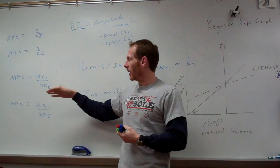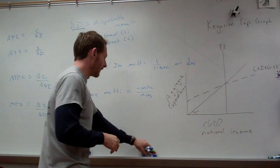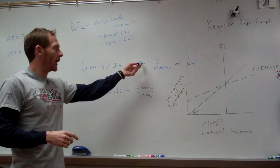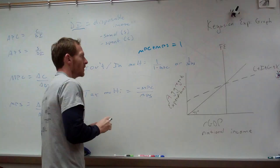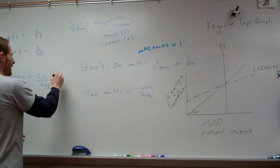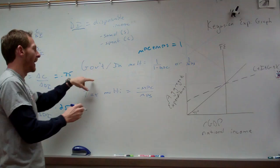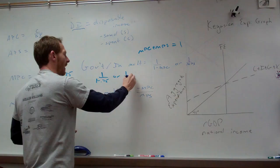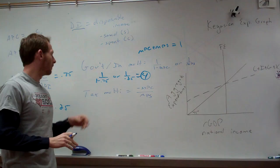We use multipliers in fiscal policy by looking at our marginal propensity to save and consume. The government and investment multiplier is 1 over (1 minus MPC), or equivalently 1 over MPS, because MPC plus MPS must equal one. For instance, if MPC equals 0.75, then MPS equals 0.25. The multiplier would be 1 over (1 − 0.75) = 1 over 0.25 = 4. That means for every one additional dollar spent by the government or through investment, GDP increases four times — so $100 in government spending adds $400 to GDP.